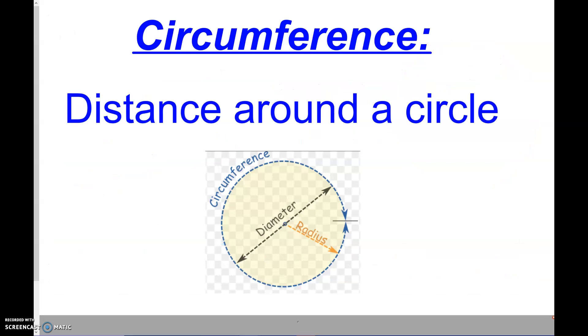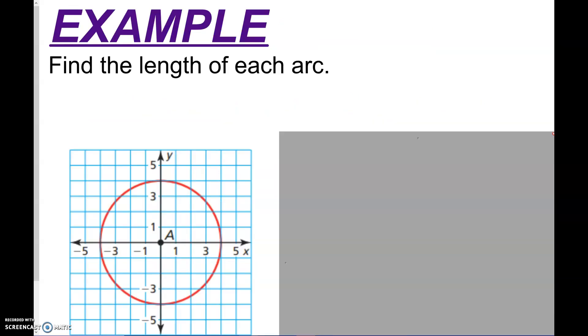So we have the circumference, which is always the distance around a circle. So you have a starting point and if you go all the way around the circle, you find the circumference. In a polygon, we call that the perimeter. But in the circle, we call it a circumference. The diameter, we still know, is the longest chord in a circle and the radius. So the radius is half the length of the diameter.